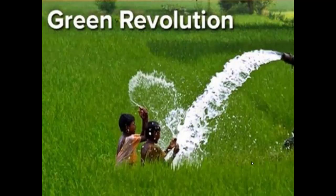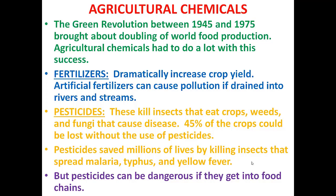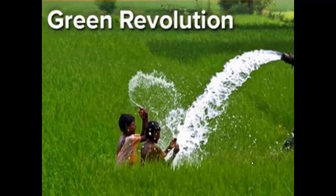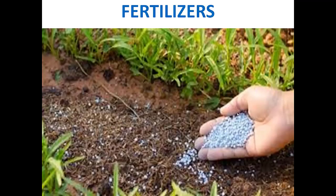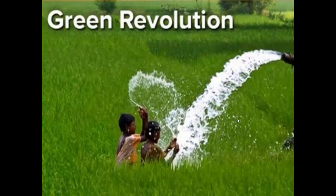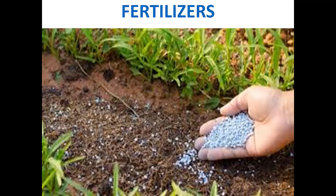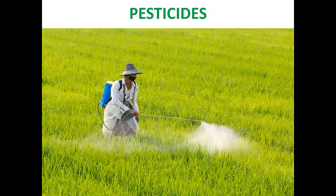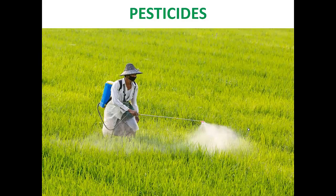We will learn about how pesticides get into food chains in our next session. These are the fertilizers, and this shows the effect of the Green Revolution — more food production resulted. These pesticides are sprayed in the fields to kill insects, get rid of weeds, and also fungi which cause diseases. This is the end of today's topic. Hope you understood. Thank you, have a nice day.